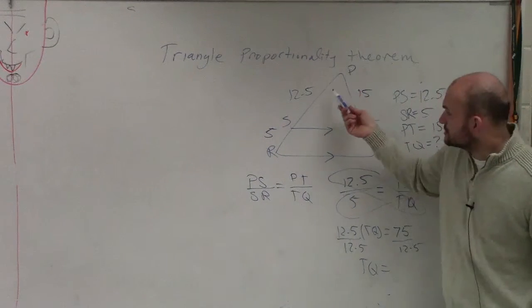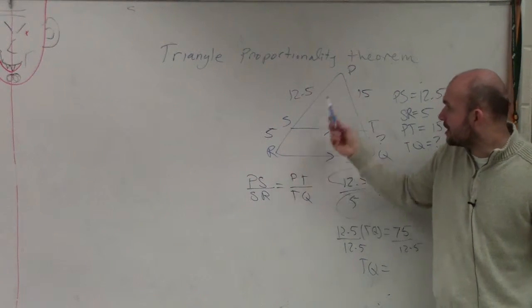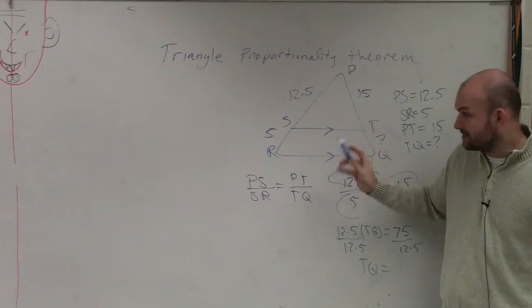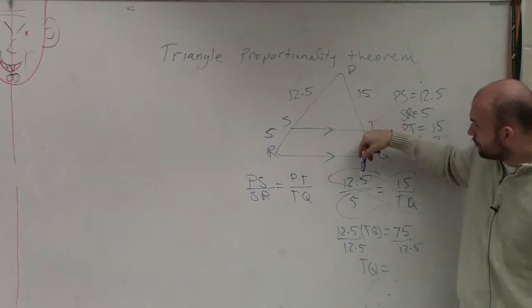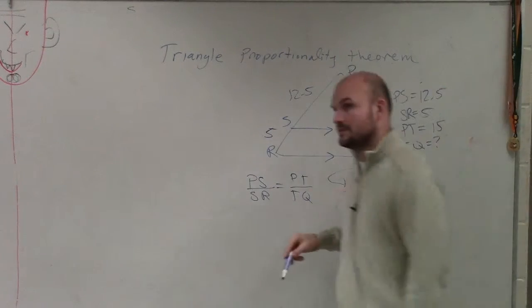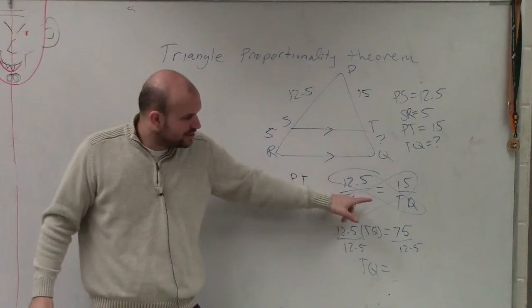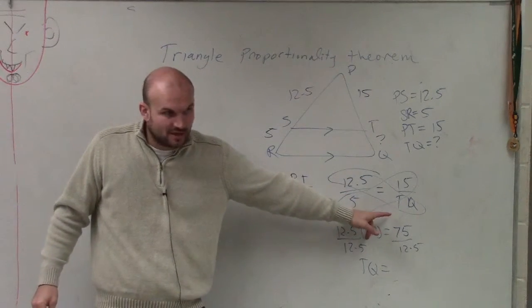Do you guys understand that PS is to SR as PT is to TQ? That's the proportionality theorem. So PS is 12.5, SR is 5, PT is 15, TQ we don't know. So I'm going to leave it as TQ.